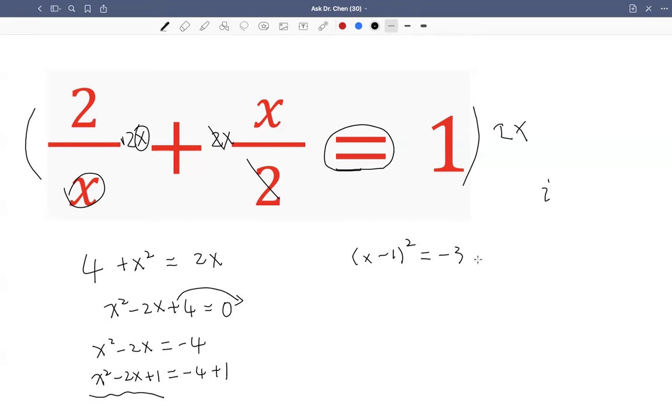So we don't have real solutions, but we have complex solutions. Remember, i equals the square root of negative 1. Imaginary numbers. Or i squared equals negative 1. So that means negative 3, which can be written as 3i squared.